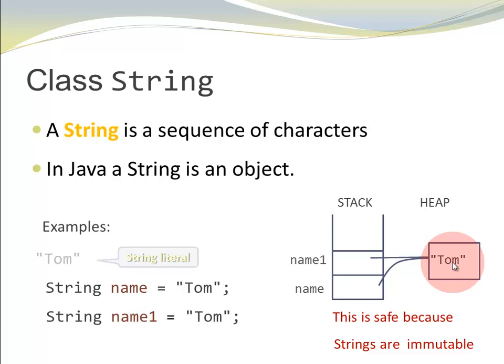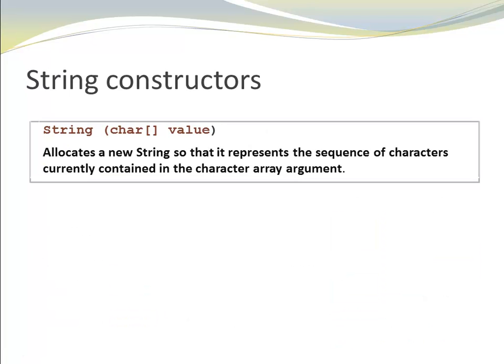This is safe because Strings are immutable. That means it is guaranteed that neither of the variables is going to modify this object. So both of them can point to the same immutable object safely. At this point, we created a new String based on a String literal.